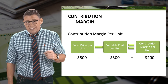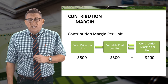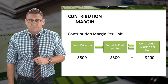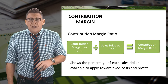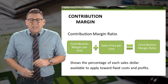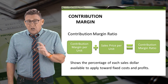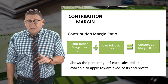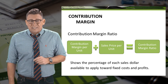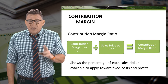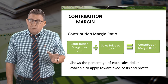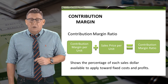When a company sells one more unit, it gets an additional $200 of contribution margin. Another important concept is the contribution margin ratio. It is calculated by taking contribution margin per unit and dividing it by the unit price. It is a percentage of each sales dollar that is available to cover fixed costs and normal profits.